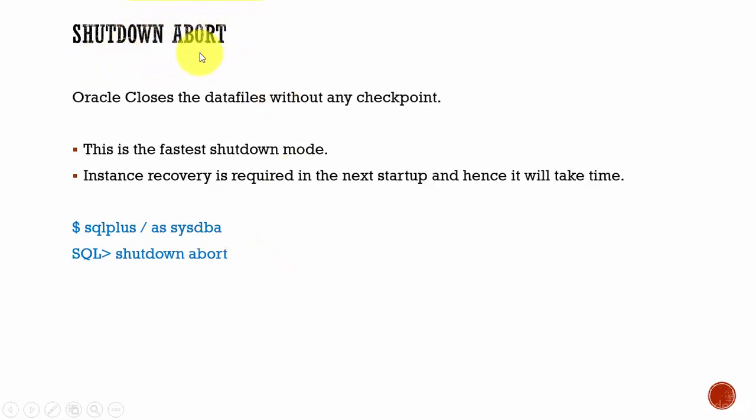The final mode is shutdown abort. In this mode, the database is shut down quickly — it doesn't wait for anything and it doesn't even issue a checkpoint. It just closes all the files and shuts down the database. That is why this is the fastest shutdown mode. Since the files were closed abruptly without any checkpoints, when we start the database next time, we need instance recovery, which will obviously take time. Unless necessary and you see issues in the database, you shouldn't shut down the database in abort mode, because shutting down in abort mode will lead to an inconsistent database.